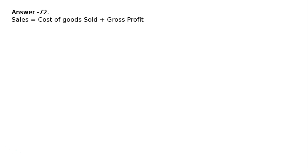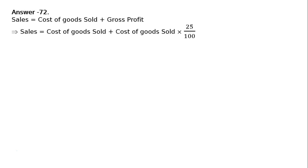Question 72: from the following information, calculate the opening inventory. Goods are sold at a profit of 25 percent on cost. We are not given the cost directly, but we have been given sales. So the approach is: Sales equals Cost of Goods Sold plus Gross Profit. Since goods are sold at 25 percent on cost, Gross Profit equals Cost of Goods Sold multiplied by 25 percent.